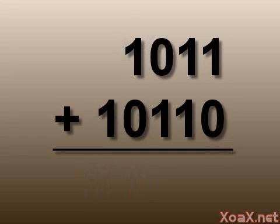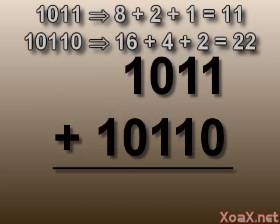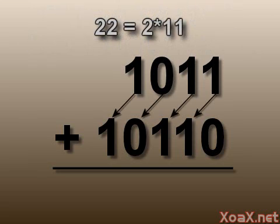That should give some idea of how to work in binary. In general, we can add two binary numbers like this: 1 0 1 1 and 1 0 1 1 0. These numbers represent 8 plus 2 plus 1, equal to 11, and 16 plus 4 plus 2, equal to 22, respectively. Notice that 22 is 2 times 11, and its binary representation is exactly the same but shifted left by one digit.